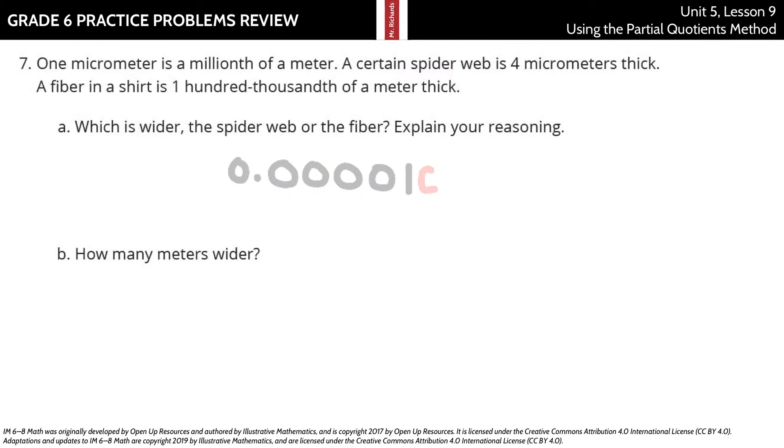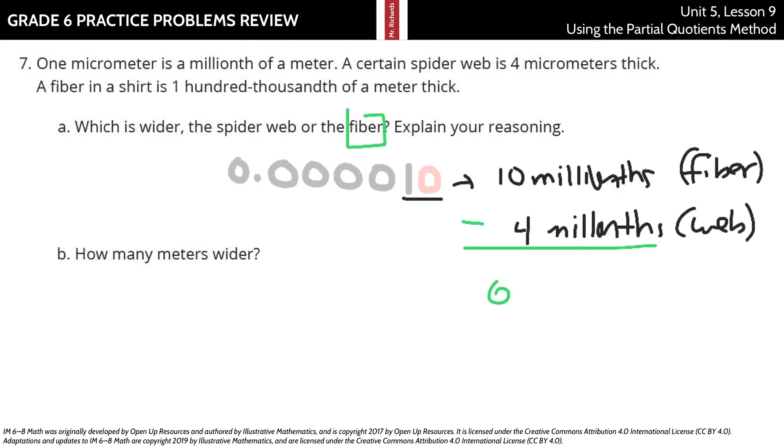Our next place is going to be millionths. And so, one-hundred-thousandth is really ten-millionths of a meter. And so, that's the fiber in the shirt. Our spiderweb is four micrometers thick, which is four-millionths of a meter. And so, which happens to be bigger and wider? The fiber. By how much? Well, subtract ten minus four, and it's six-millionths of a meter wider.